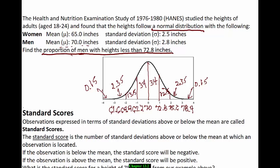Now we can answer the question: what proportion of men have heights less than 72.8 inches? That's the same as asking how much area is to the left of 72.8 inches under the normal curve. All I have to do is add up my areas to the left: 34 plus 34 plus 13.5 plus 2.35 plus 0.15 equals 84%. So the proportion of men with heights less than 72.8 inches is 84%, or 0.84.